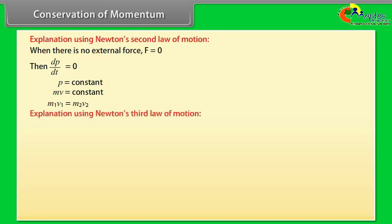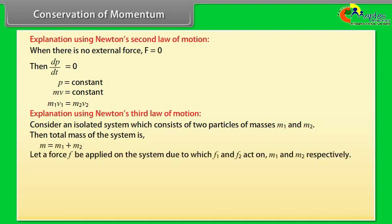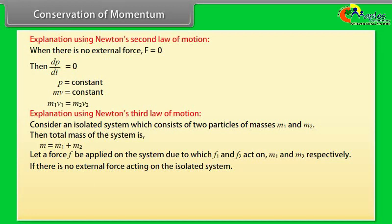Using Newton's third law, consider an isolated system of two particles of masses M1 and M2, total mass M = M1 + M2. A force F applied on the system produces forces F1 and F2 on M1 and M2 respectively. If there is no external force, F = 0, so d/dt(P) = 0 and P = constant. Hence the law of conservation of linear momentum is proved.